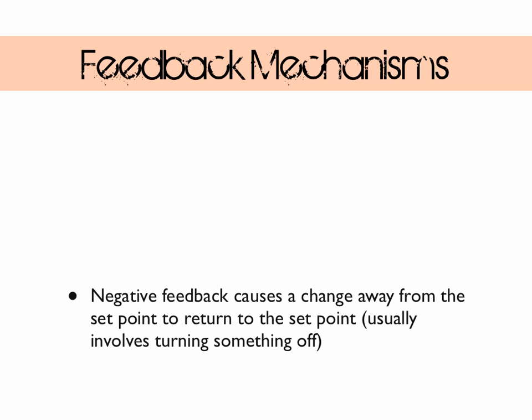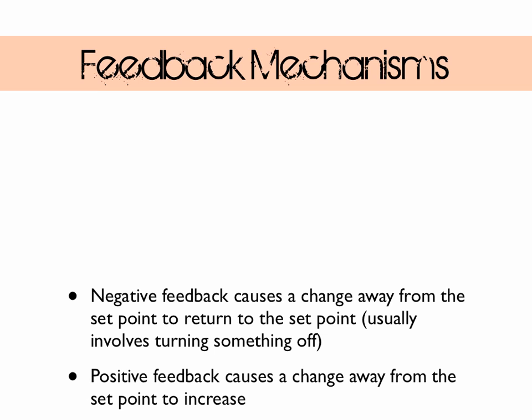Our body controls conditions by using feedback loops, and there are two kinds: negative feedback loops and positive feedback loops. Negative feedback causes a change away from the set point to return back to the set point — it opposes change, and this usually involves a mechanism in the body being switched off. Positive feedback works slightly differently and exaggerates the changing conditions. It's hard to imagine why this would be useful, but when we look at the hormones involved in the menstrual cycle in a later video things will clear up. Here's a diagram to explain what these two feedback mechanisms do.